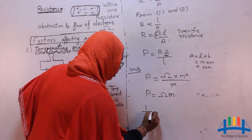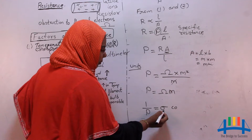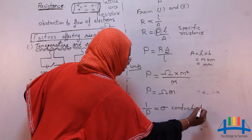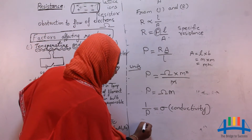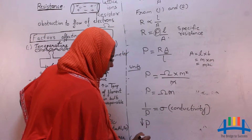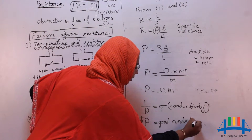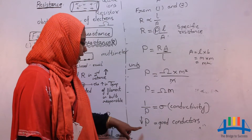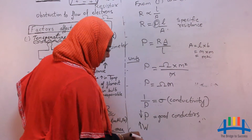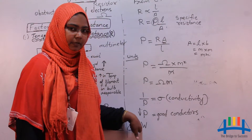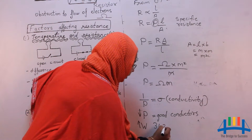The reciprocal of specific resistance is what we call conductivity, denoted by omega. Materials with low resistivity are good conductors — for example, copper, which is used for making electric wires. The metal tungsten, denoted by W, has a high resistivity value and is used for making the filament of an electric bulb. It also has a very high melting point of 3422 degrees Celsius.